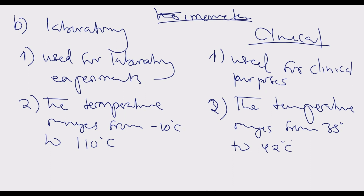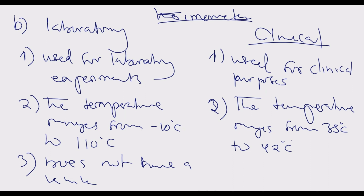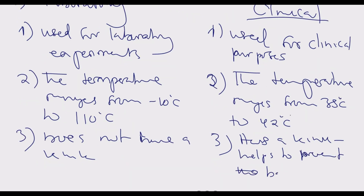Number three: the laboratory thermometer does not have a kink, while the clinical thermometer has a kink. The kink helps to prevent the backflow of mercury or alcohol, so the reading is retained after the thermometer is removed from the patient.